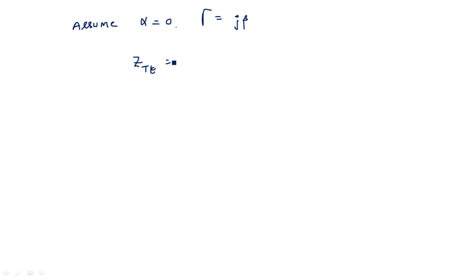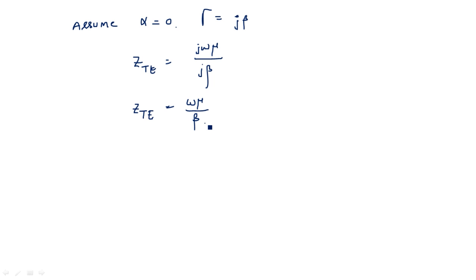So Z_TE equals ωμ/β. We can substitute the beta equation in terms of cutoff frequency and free-space frequency to rewrite Z_TE in terms of eta (η). That will be explained in the next video. Thank you.